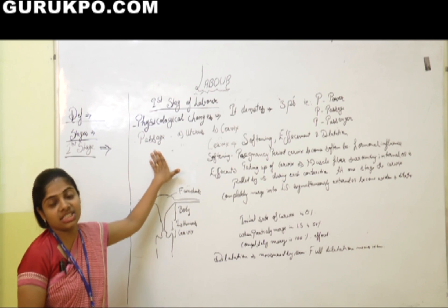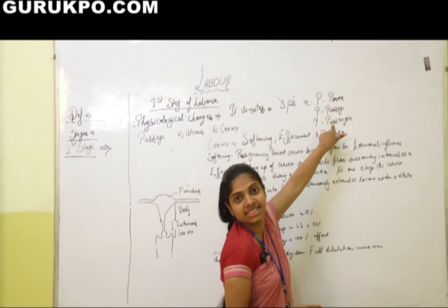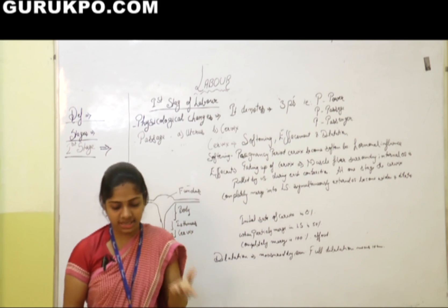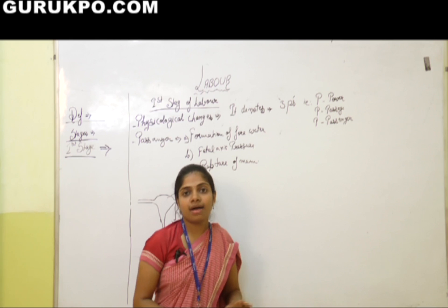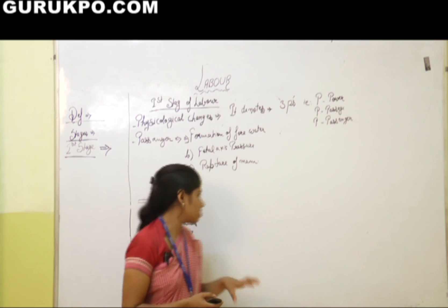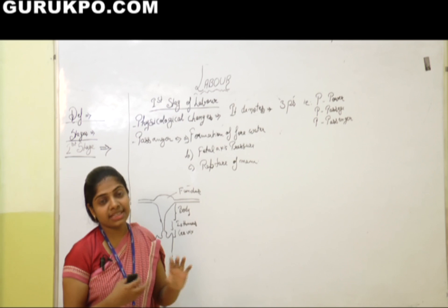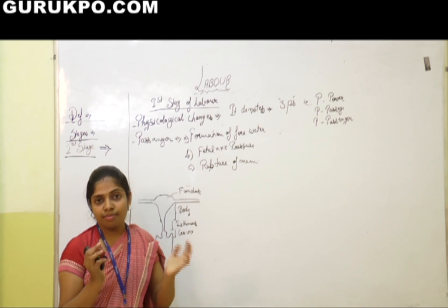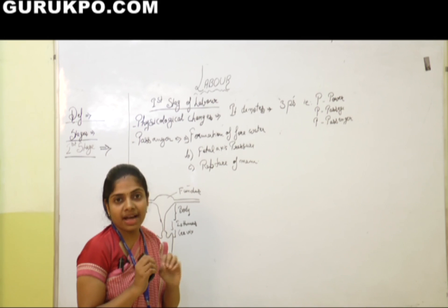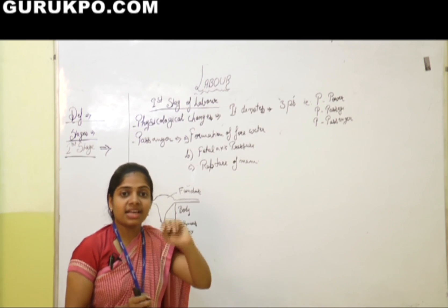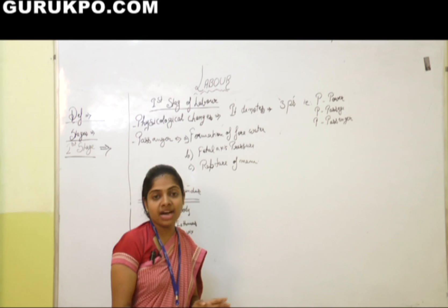Now we will talk about the passenger, that is the fetus. We will discuss the formation of forewater. In the uterus there is continuous contraction and relaxation, and by that contraction and relaxation the bag ruptures. After rupture of the bag, there is accumulation of a little amount of fluid in front of the presenting part, which is known as forewater, and a little amount of water at the back of the presenting part, which is known as hindwater.